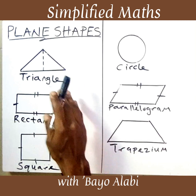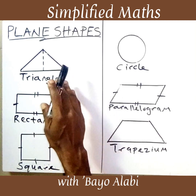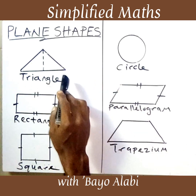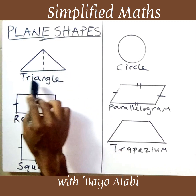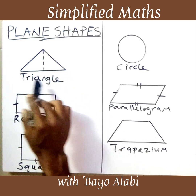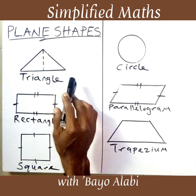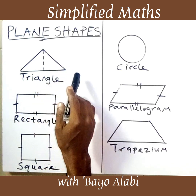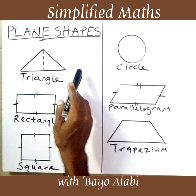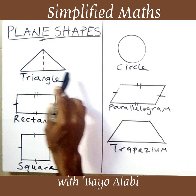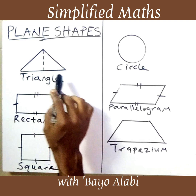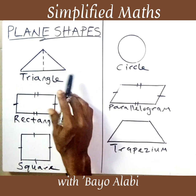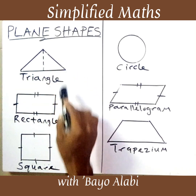There are so many plane shapes, but because of the space I have here I cannot draw more than six of them. I'm going to start with the triangle. A triangle is a plane shape, and we have different types: right-angled triangle, isosceles triangle, obtuse triangle, and so on. A triangle is an object with three sides and three angles.